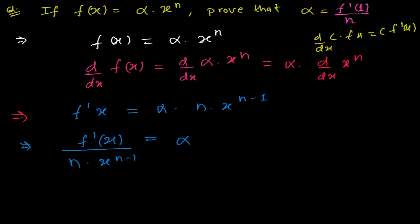So n times x to the power n minus 1 equals to alpha. So what we get, let me write here, alpha is equals to f'(x) divided by n times x to the power n minus 1. We get this.